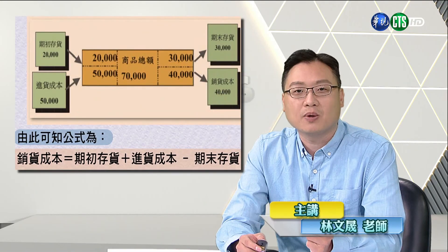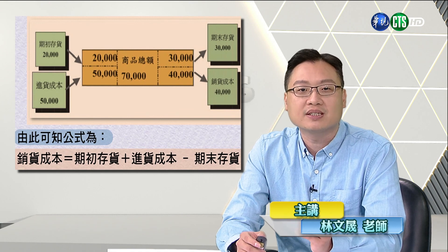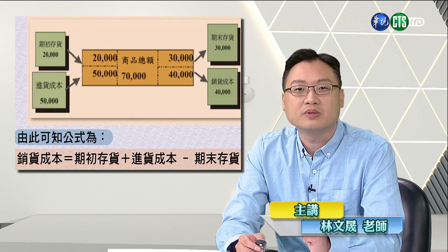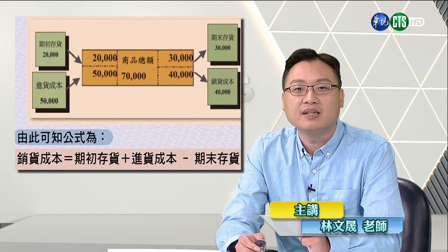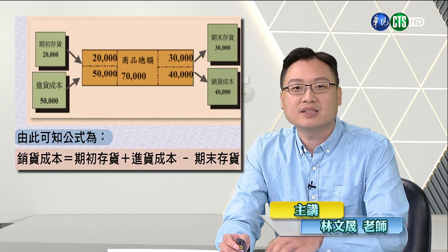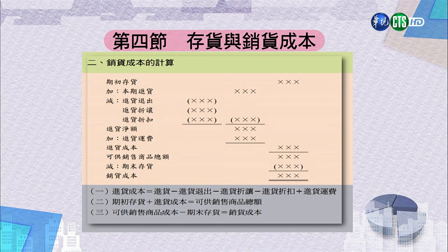可銷售商品總額七萬中，三萬未售出流入期末存貨，四萬售出稱為銷貨成本。進貨運費也會分配到銷貨成本或期末存貨兩部分。因此公式為：銷貨成本 ＝ 期初存貨 ＋ 進貨成本 － 期末存貨。損益表的格式從期初存貨加進貨成本減期末存貨即得銷貨成本，整個買賣業的成本計算到此告一段落，第十一講課程結束，謝謝大家收看。